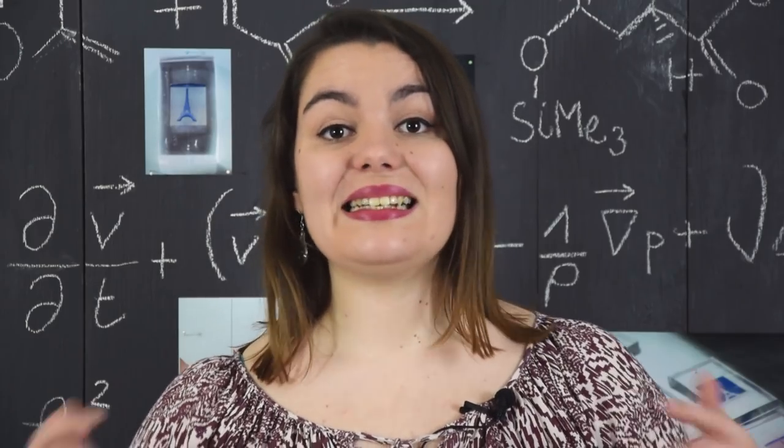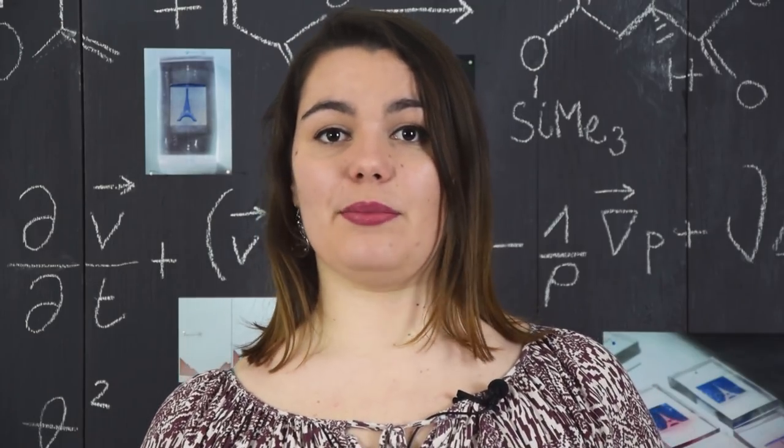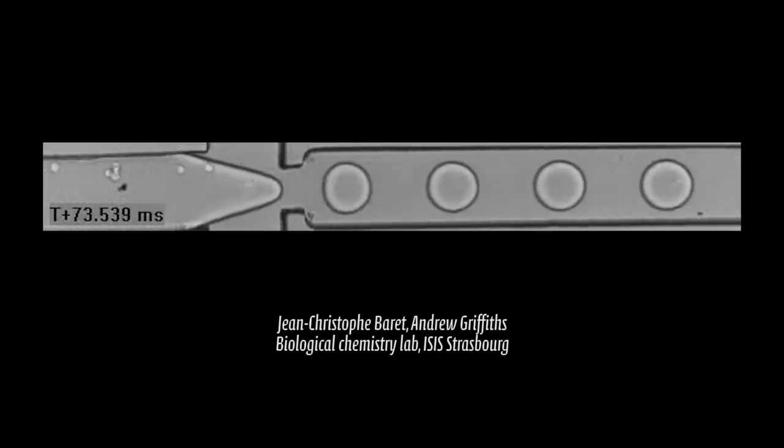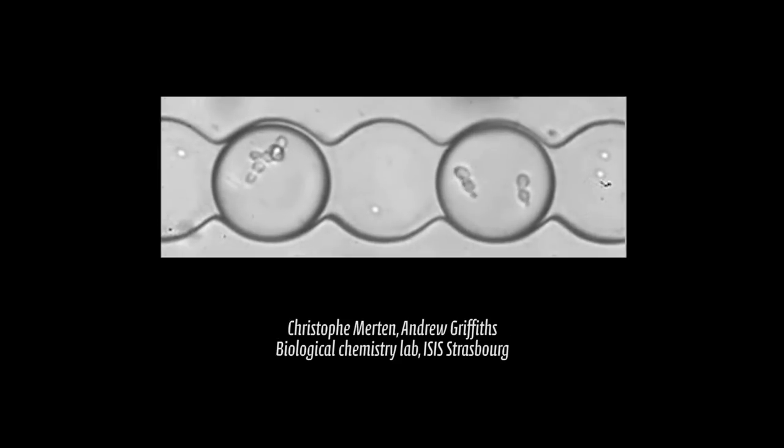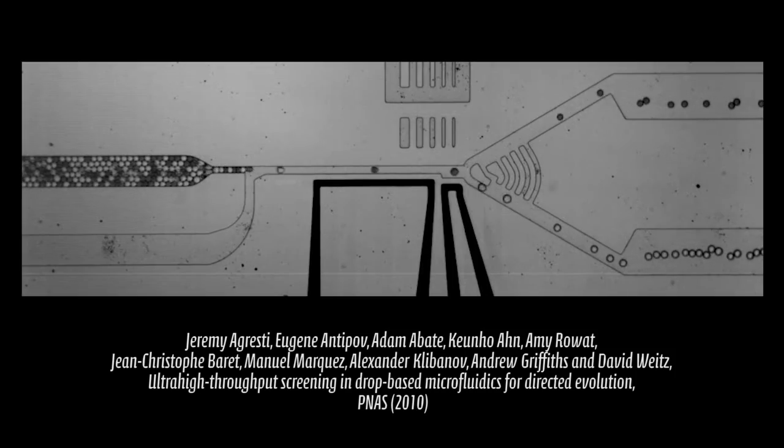We also know how to put things inside a droplet, like cells for example. We can use the droplet as a carrier. A cell is placed inside, the droplet goes wherever we want, and the cell is released. The droplets can also be used as mini petri dishes, in which we can do cell culture. And lately, we've even been able to sort out droplets based on their color.